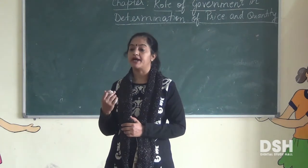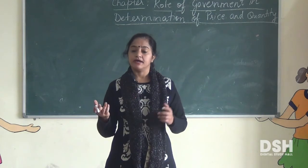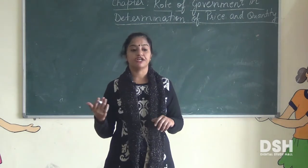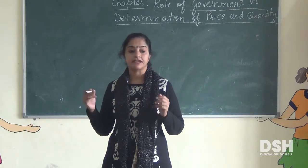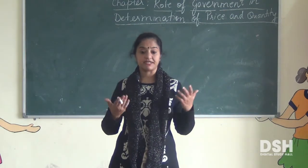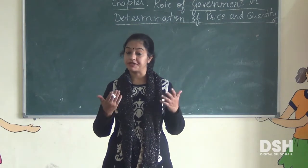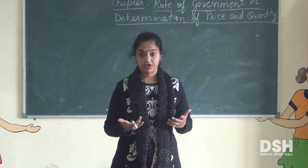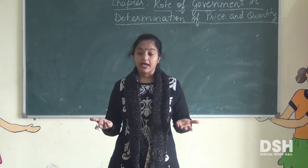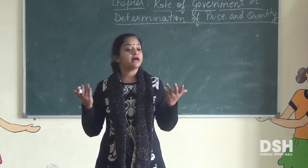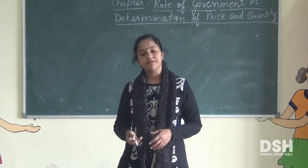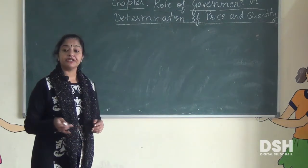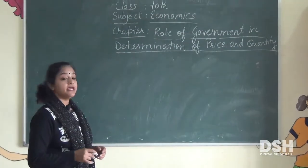How do vegetables come to your home at such a reasonable amount? And if it is too expensive, what does the government do about it? We heard about the government's cost rate of price last year. Today we will talk about and understand what role the government plays in order to keep things in order.